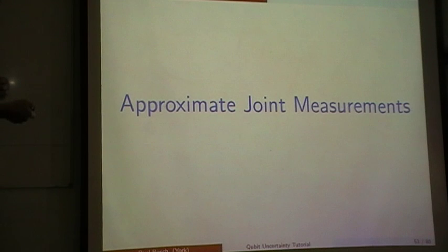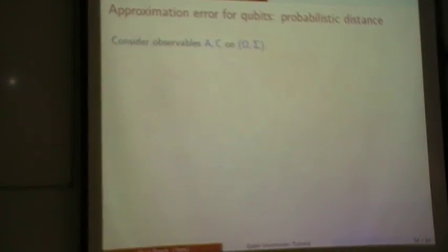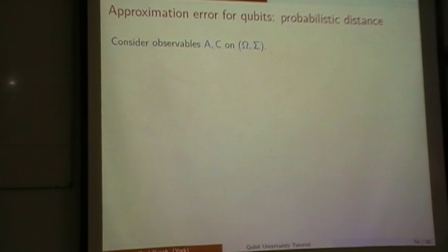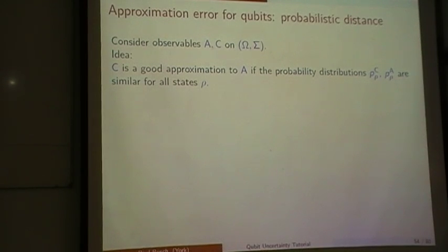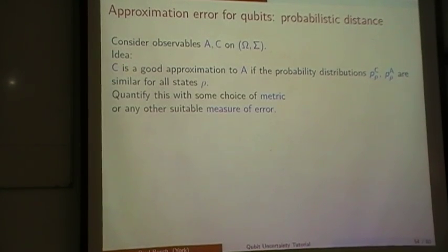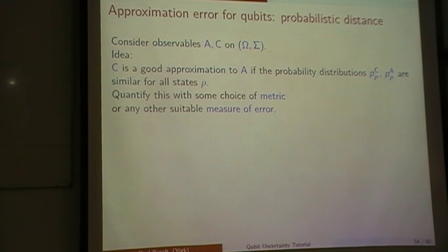Now we're ready to go to approximate joint measurements. Today I'll do this with the probabilistic distance, and tomorrow I'll give you a variety of alternative distance measures with which one could do similar analysis. The idea, as I said earlier, is that C is a good approximation to observable A if the probability distributions are similar for all states, and I want to quantify that with some choice of metric — first on probability distributions and then on observables.